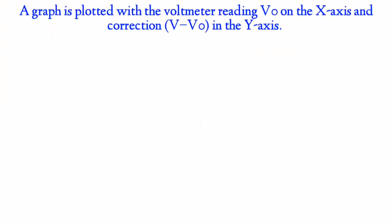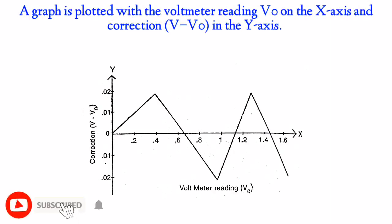A graph is plotted with the voltmeter reading V zero on the x-axis and correction, V minus V zero, in the y-axis. A zig-zag curve is obtained.